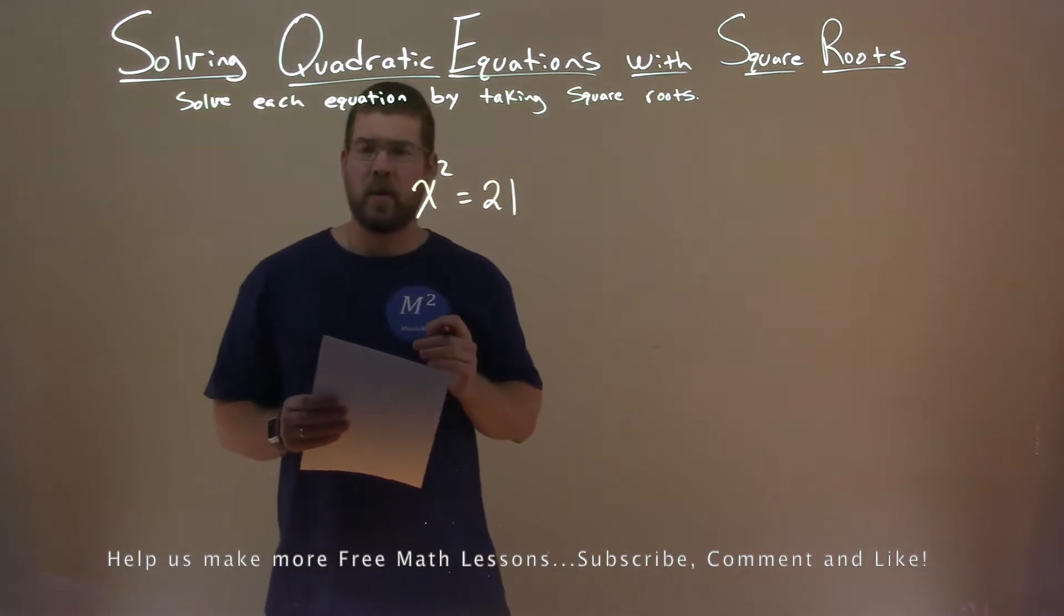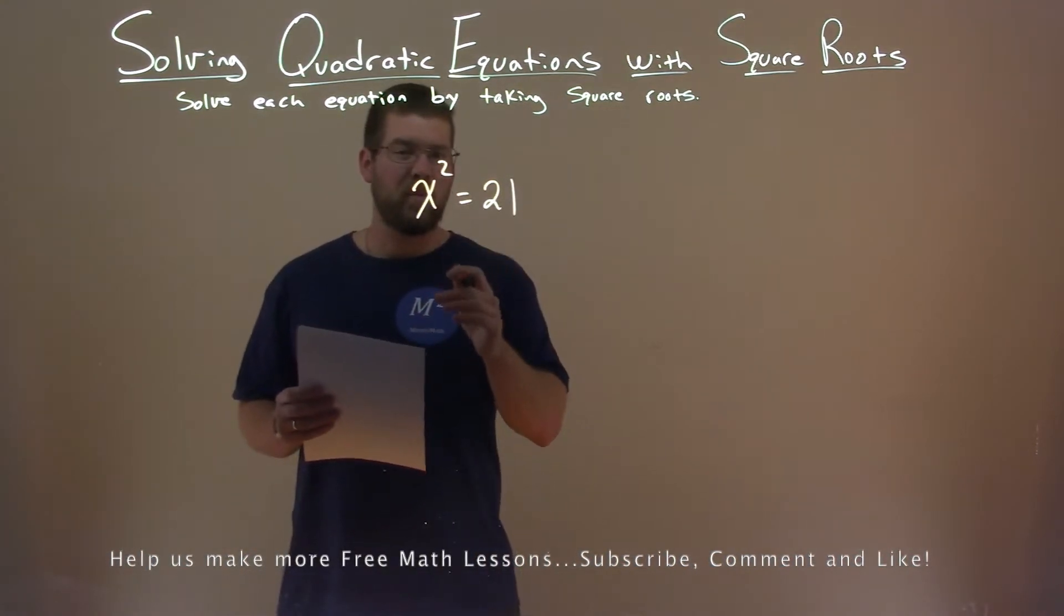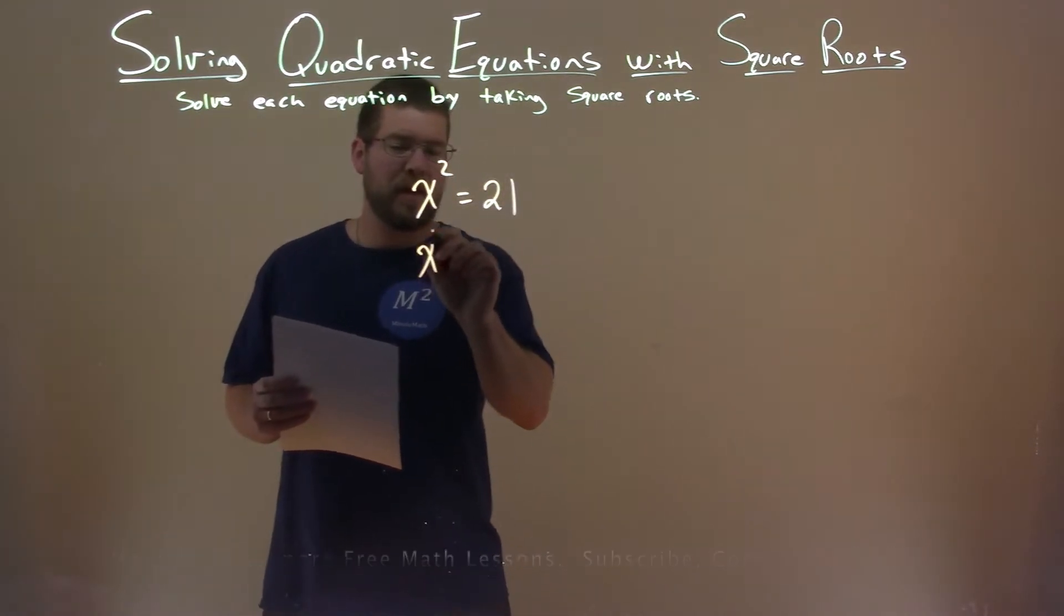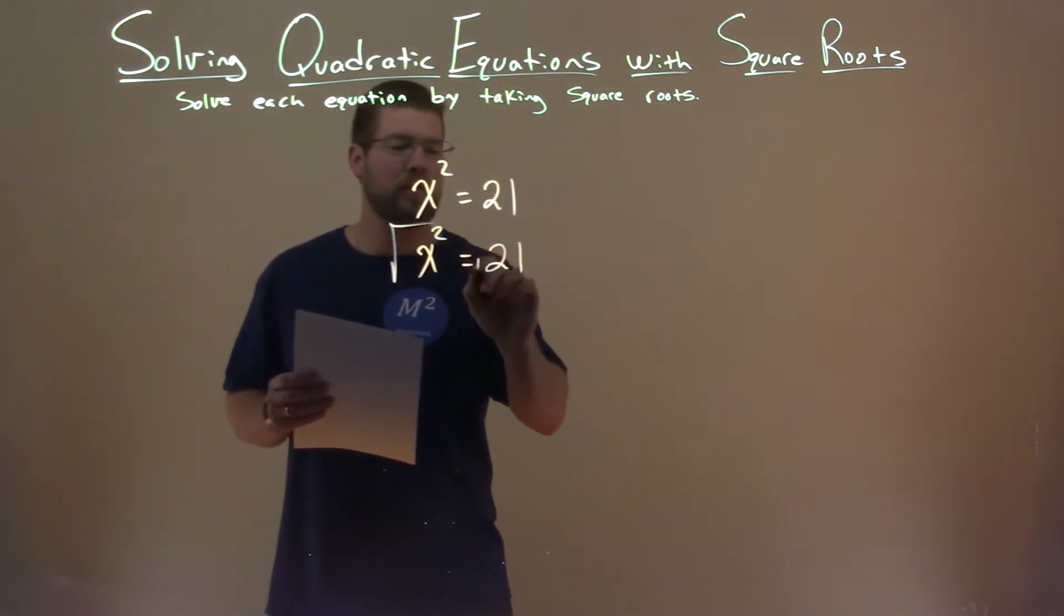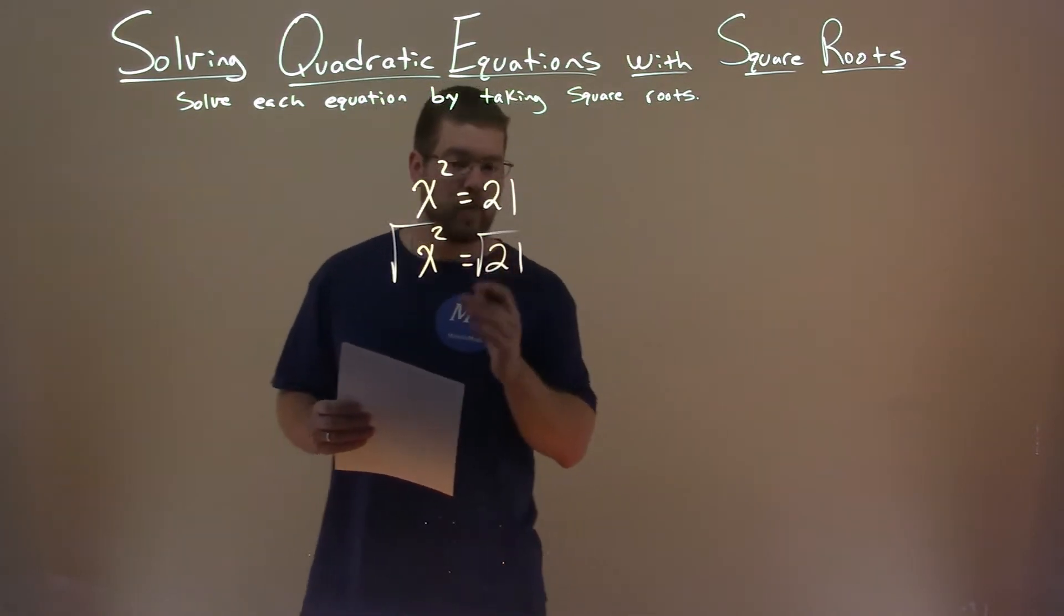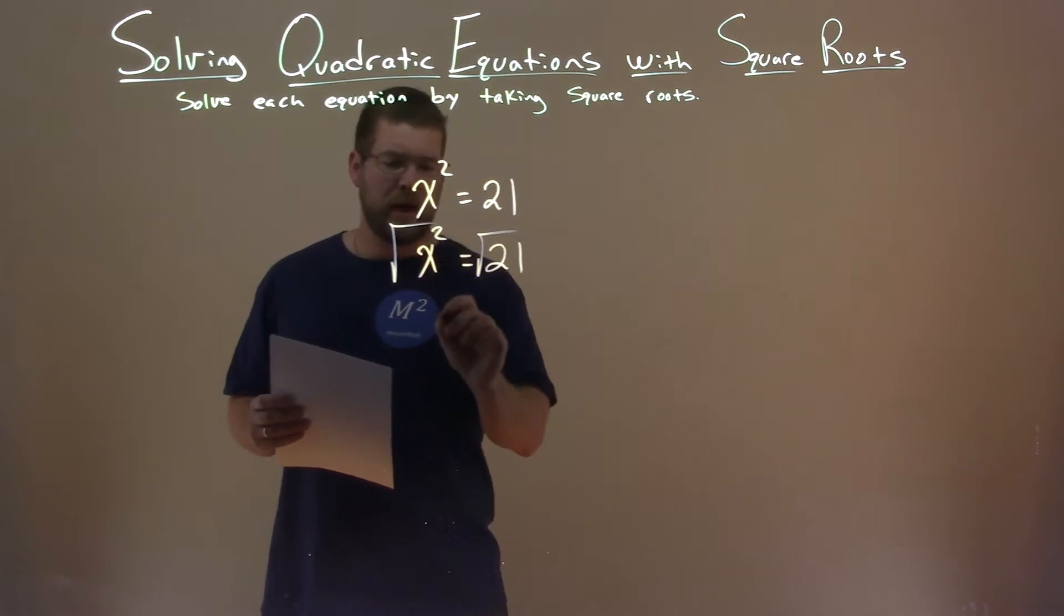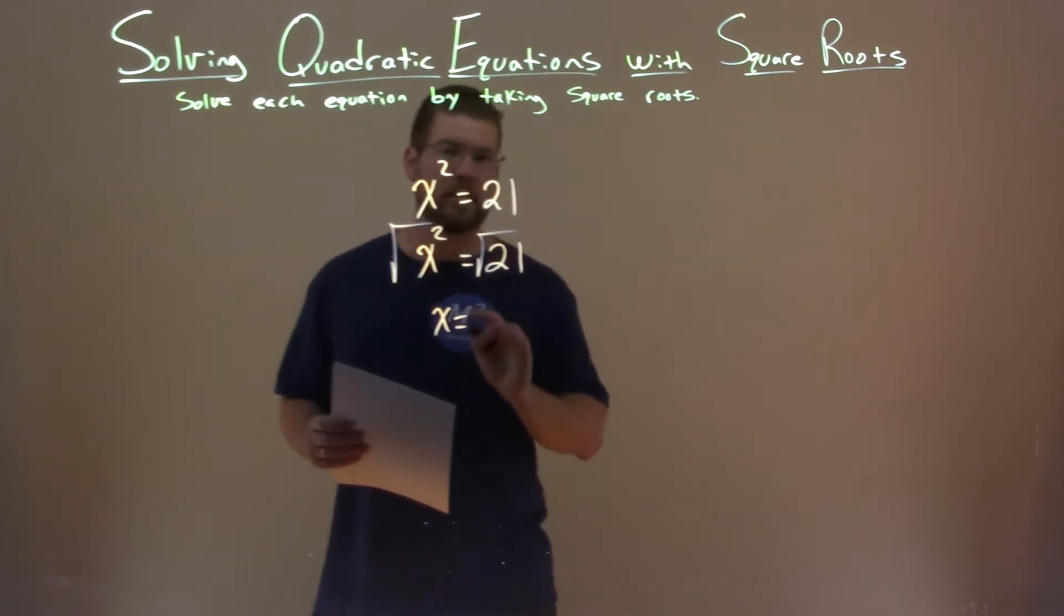Our x variable is already by itself, so it's being squared. The opposite of that is the square root. So I'm going to take the square root of both sides of the equation. That cancels out the x squared, leaving me x by itself.